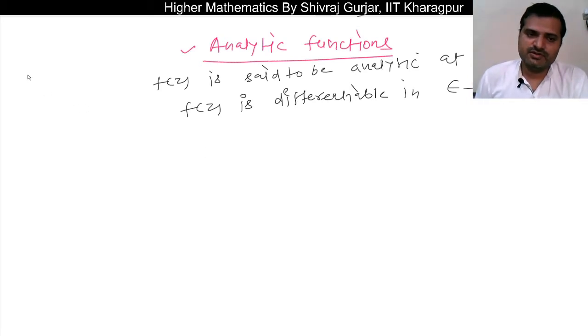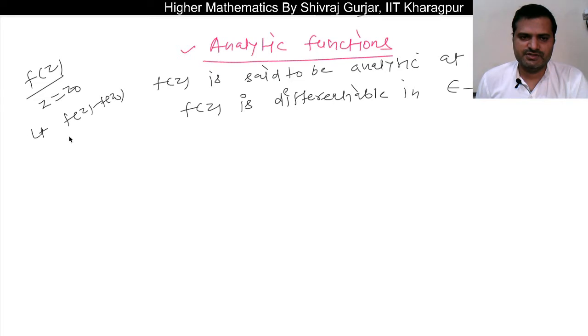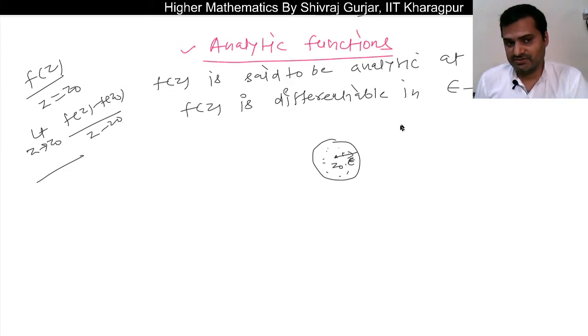Is differentiable in epsilon neighborhood of point z₀. Okay, so what does this mean? We have seen that a function f(z) is differentiable at z equals z₀ when the limit [f(z) - f(z₀)]/(z - z₀) as z tends to z₀ exists. Now in this case, if we are looking at the function at z₀, it's necessary that its epsilon neighborhood—the circle of epsilon radius—at all points in this region, the function should be differentiable.